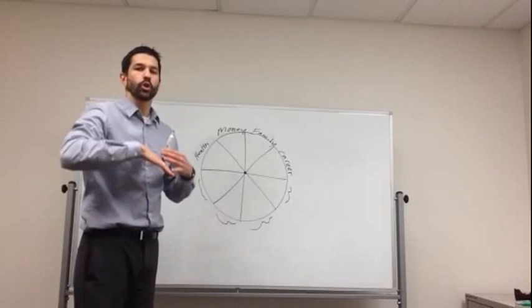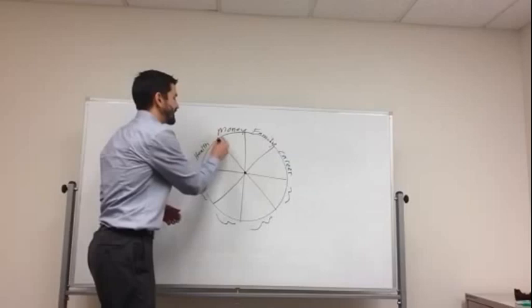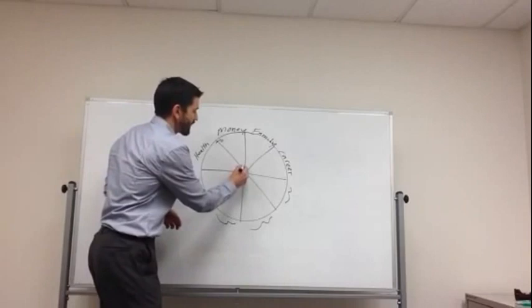The middle of the wheel represents absolutely no satisfaction. Top here is a 10. You're extremely satisfied with how things are going. So we have the rating anywhere from one, two, three, all the way up to 10.